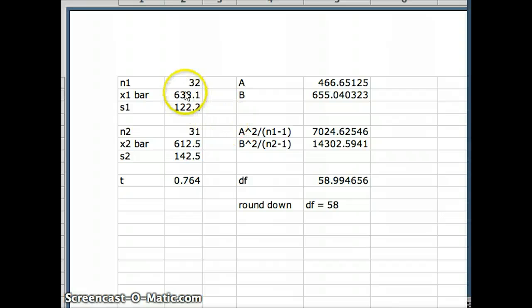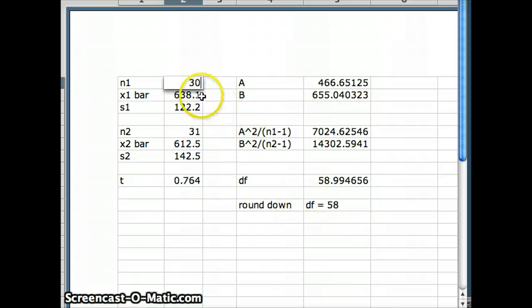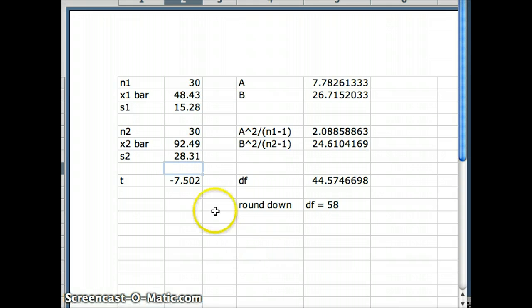The good news here, all of the programming is being done for me. I've got to plug in the new numbers: n1 is 30, x1 bar is 48.43, s1 is 15.28, n2 is also 30, x2 bar is 92.49, and s2 is 28.31. We're getting a test statistic t of negative 7.508, that is a very extreme t. The degrees of freedom are 44.57. We want to round down, so the degrees of freedom here are going to equal 44.